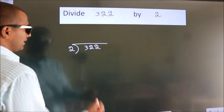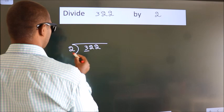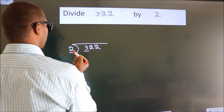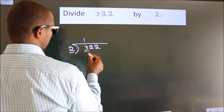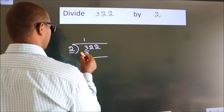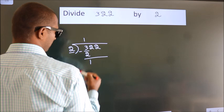Next, here we have 3, here 2. A number close to 3 in 2 table is 2 times 1 is 2. Now we should subtract. We get 1.